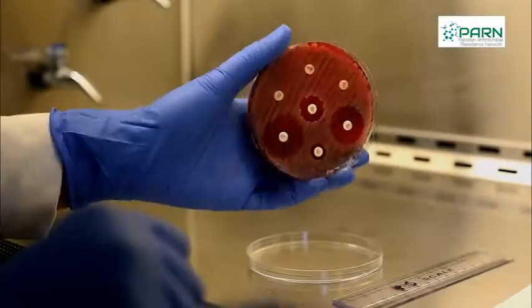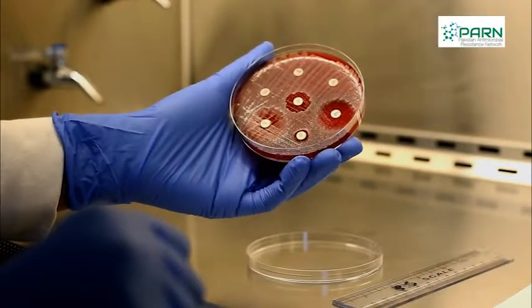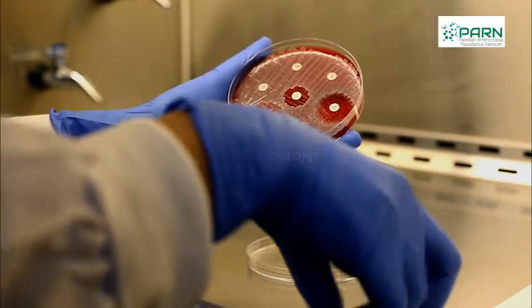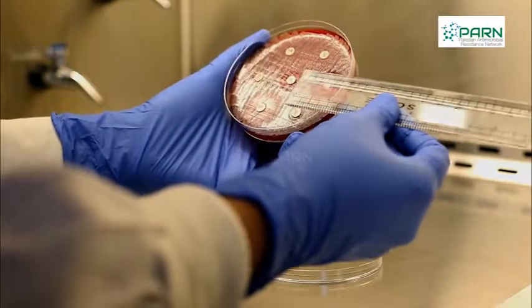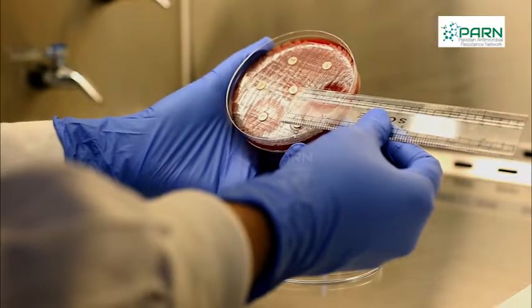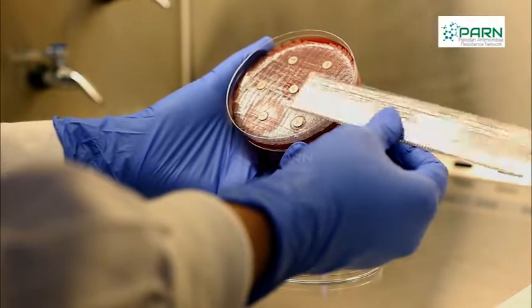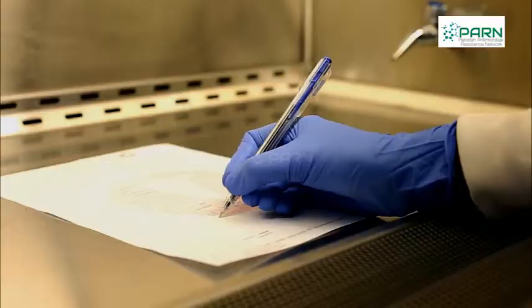Record the zone of inhibition which is the area around the disc showing no visible growth. If organism is growing up to the edges of antimicrobial discs, zone size is reported as 0 mm.